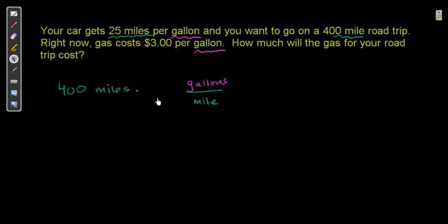So, how do we solve this? We have 1 gallon for every 25 miles — that is the ratio we have learned. 25 miles per 1 gallon. If we have 1 gallon we go 25 miles, and we need to go 400 miles.